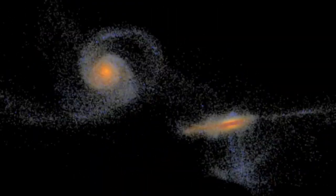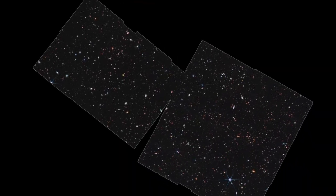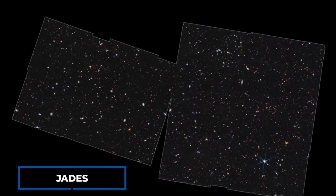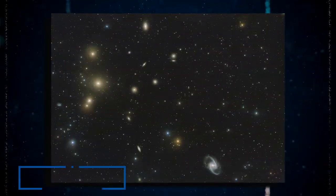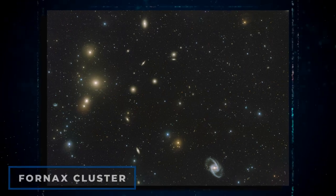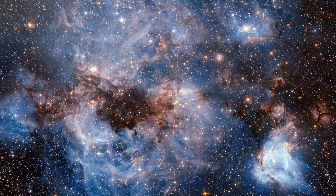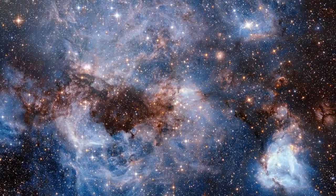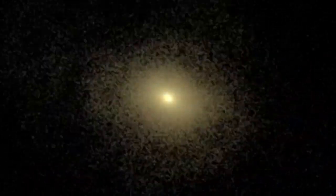The study is the result of an international collaboration known as the JWST Advanced Deep Extragalactic Survey, which collected data from two inconspicuous regions of the sky over a month-long period. One region is located near the Fornax Cluster, while the other is in the constellation Ursa Minor. The discovery of over 700 recently found young galaxies in these areas contributes to our understanding of the early universe.